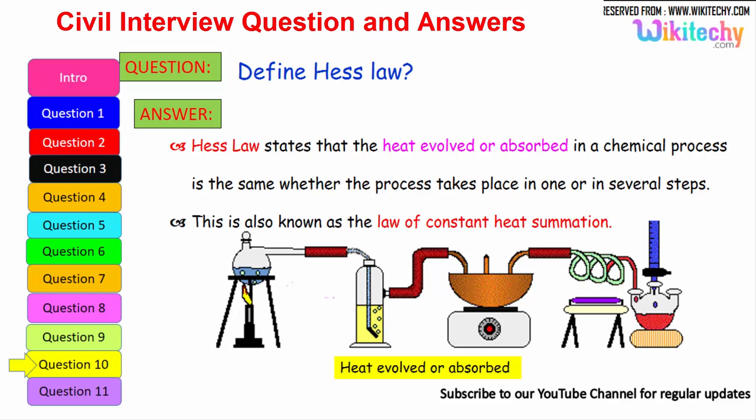Define Hess's law. This is one of the very important questions. In case of generating heat between an object in emissions, Hess's law states that the heat evolved or absorbed in a chemical process is the same whether the process takes place in one or in several steps. This is also known as the law of constant heat summation.